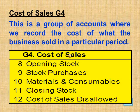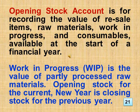Section 4.3 — Cost of Sales, Group 4. This is a group of accounts where we record the cost of what the business sold in a particular period. They are: opening stock, stock purchases, materials and consumables, closing stock, plus cost of sales disallowed. Opening stock account is for recording the value of re-sale items, raw materials, work in progress, and consumables available at the start of a financial year.